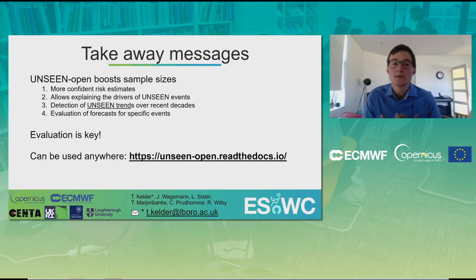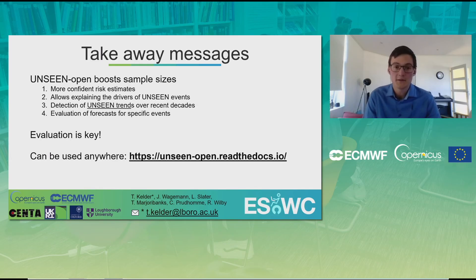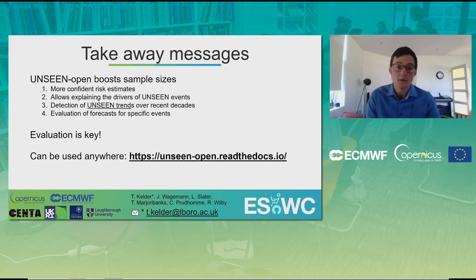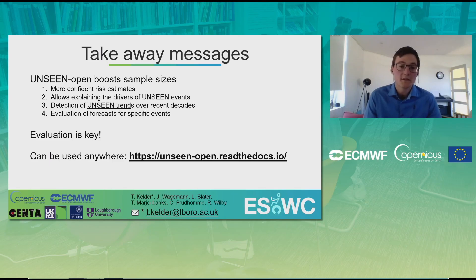These are the three examples. From them, we've learned that Unseen Open boosts the sample size, enabling more confident risk estimates — as shown for the UK floods, where risk estimates help strengthen flood defenses. Secondly, the larger sample size allows for explaining the drivers of unseen events, as highlighted for the Siberian heatwave, where we can explore the drivers of the most extreme events. Thirdly, detection of unseen trends over recent decades: over California, we can explore the changing frequency of occurrence of such infrequent events.